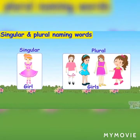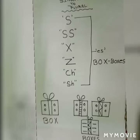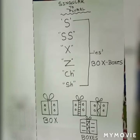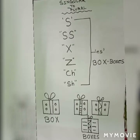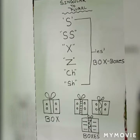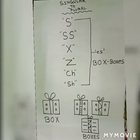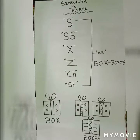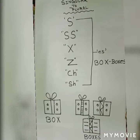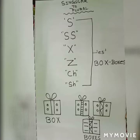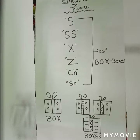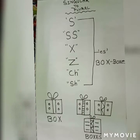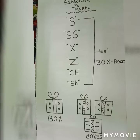If a singular word ends with s, ss, x, z, ch, or sh, we generally add "-es" to the end of the word. For example, b-o-x, box — b-o-x-e-s, boxes.